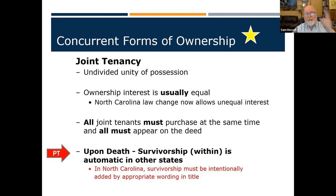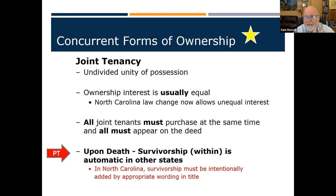Joint tenancy with rights of survivorship requires four unities — possession, interest, time, and title (PITT). On the national exam, ownership interests must be equal. All owners must take possession with the same amount of interest at the same time, and all must appear on the deed. This isn't limited to two people — four golf buddies could buy a condo in Pinehurst and split it four ways.